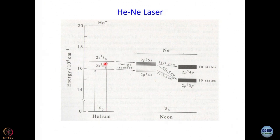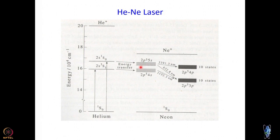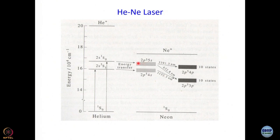When energy gets transferred, it is very easy to populate the levels 2P⁵4S and 2P⁵5S of Ne⁺. The electron configuration of Ne⁺ ground state is 2P⁵, and electrons have been promoted to 4S and 5S levels. Lasing is not taking place between this and the ground state — that energy difference would be very high. Rather, there are many states — 10 states each of 2P⁵4P or 2P⁵3P — and these are at high energy but not the ground state. So their population is essentially zero, meaning population inversion is easily achieved.